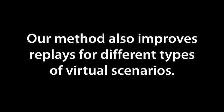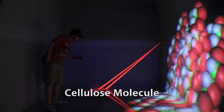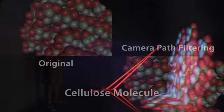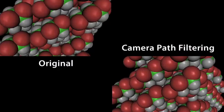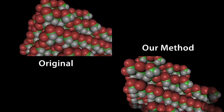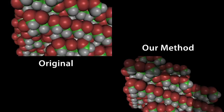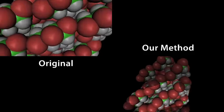Our method also improves replays for different types of virtual scenarios. Here, a researcher is walking around a cellulose molecule. The original viewpoints create an unwatchable replay, and the camera path filtering while smooth offers little insight. Our method results in a smooth orbit as the researcher walks around the molecule.